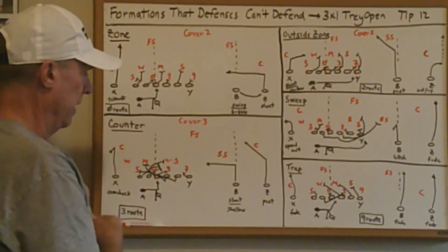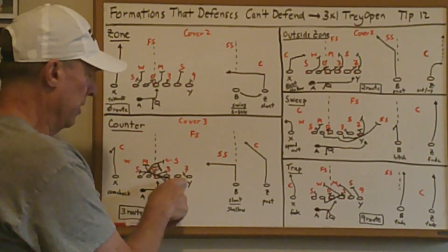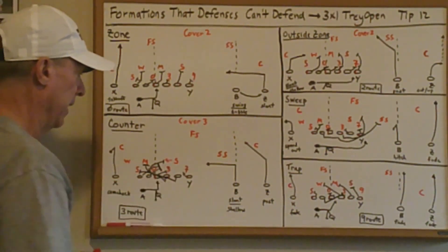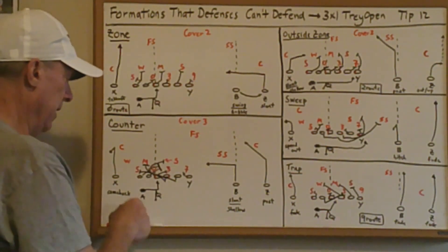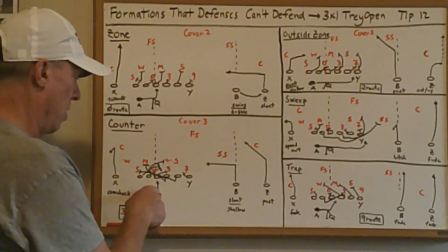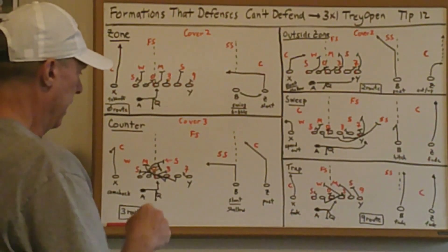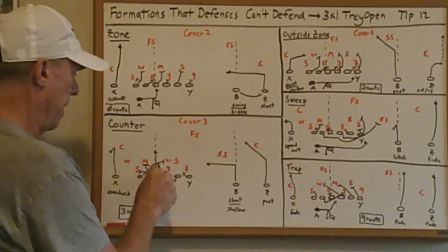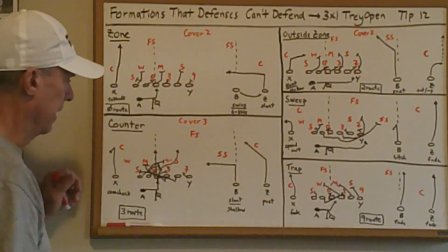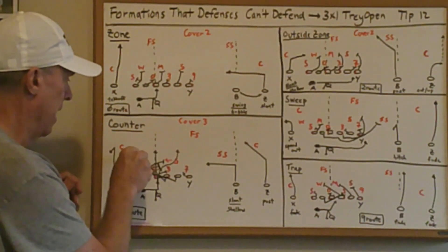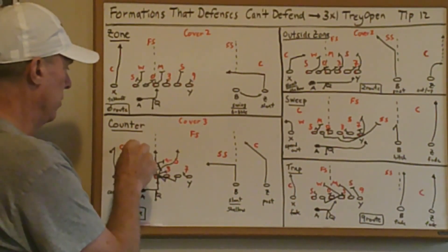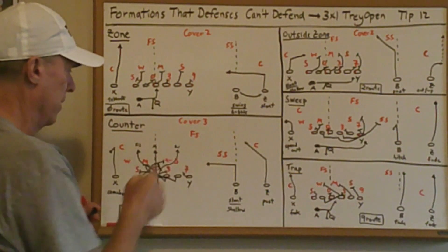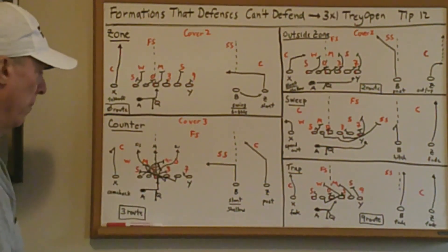The tight end on the backside, with a 7-technique aligned there, steps with his left foot and aims at the inside armpit breastplate to scoop the 7-technique and prevent him from running the play down from behind. The running back uses the same technique as inside zone — wait for the quarterback to touch the ball, shuffle over, head down the midline. The track ideally is straight down the midline, but the back may exit to the frontside or backside depending on how the Sam linebacker reacts to the play.